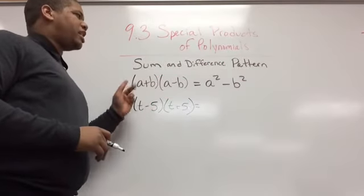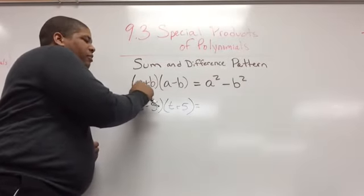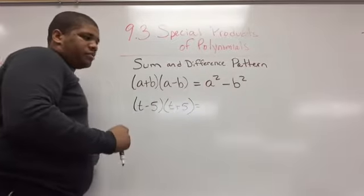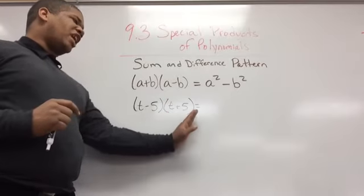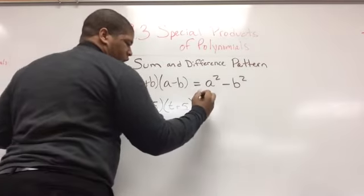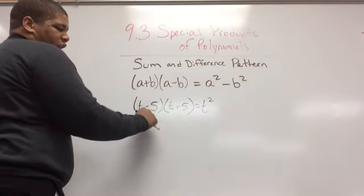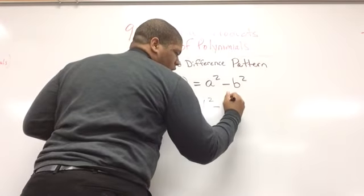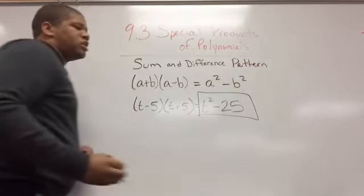The last pattern we're going to look at is the sum and difference pattern. If I have (a + b) times (a - b), that's going to equal a squared minus b squared. So if I'm given (t - 5) times (t + 5), all I have to do is square the first terms — t times t is t squared — and then multiply the two b's: negative 5 times 5 is negative 25. So my answer is t squared minus 25.